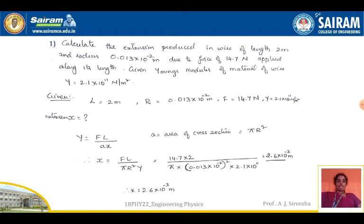The area of cross-section of the wire is cylindrical, so A = πR². The value of R is given, so square it and multiply by π to get the area of cross-section. We have to find X, so rearranging Y = FL/AX, bringing X to the left-hand side: X = FL / (A·Y). Substituting A = πR², the formula becomes X = FL / (πR²·Y).